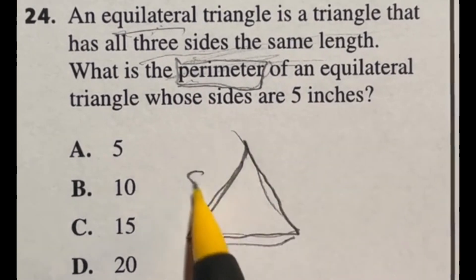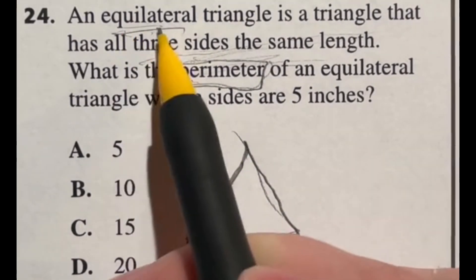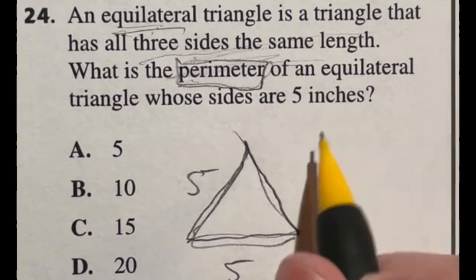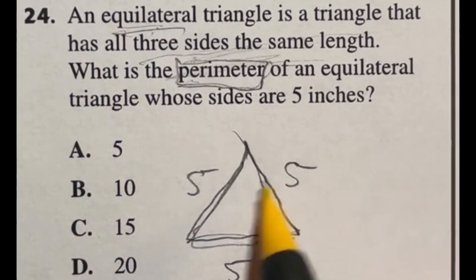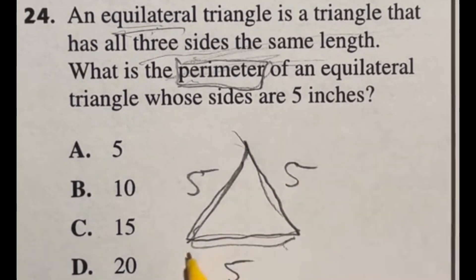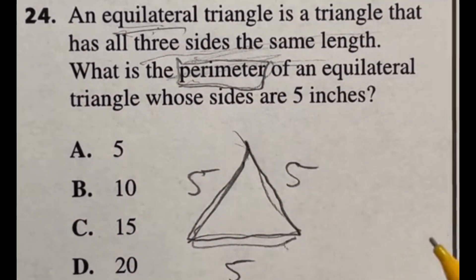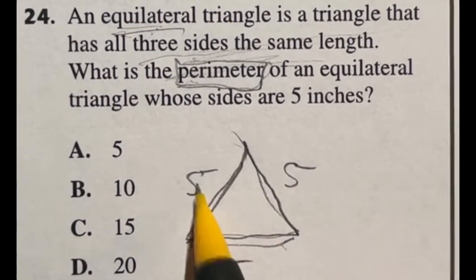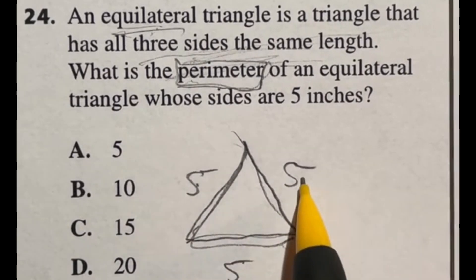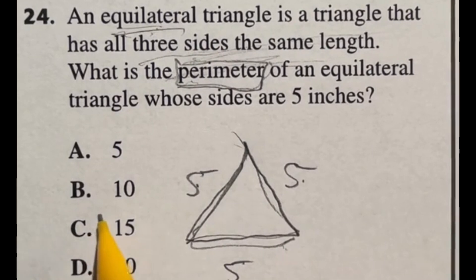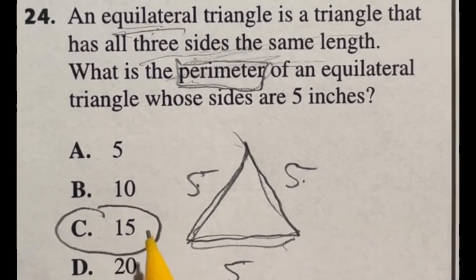So that means that if one of these sides is 5, we know equilateral means that all three will be 5. So now we're looking at this as our entire perimeter. If I just add these up it should give us our final answer. So we got 5 plus 5 plus another 5 is going to give us 15, which is answer C.